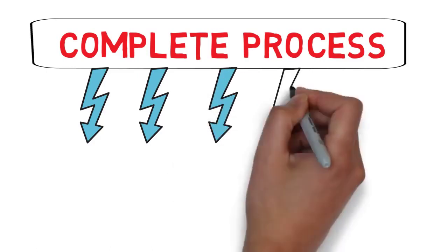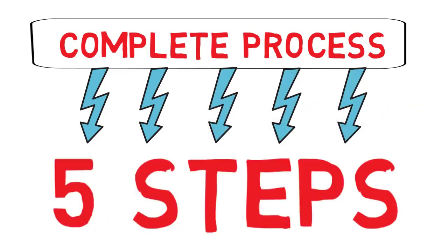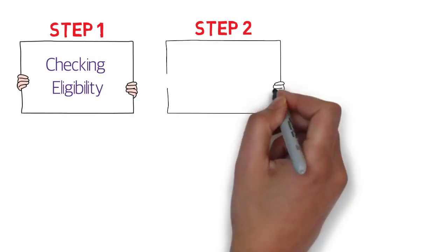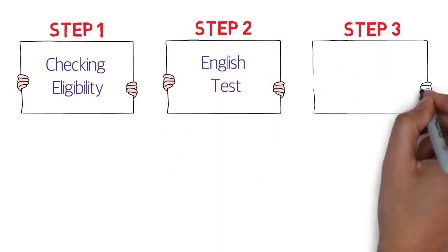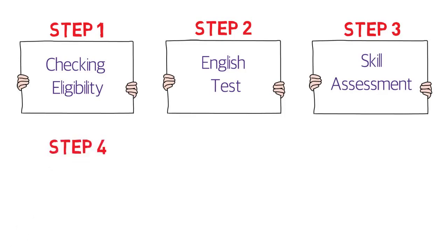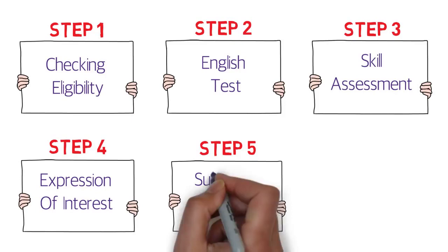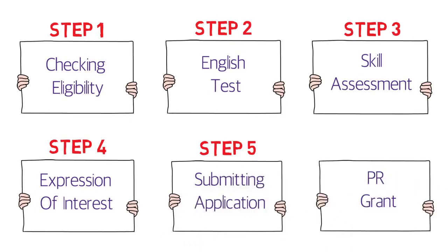I've divided the complete process into five simple steps. Step one is checking eligibility, step two is the English test, step three is skill assessment, step four is expression of interest, and step five is submitting your application — after which you'll be given a PR grant.